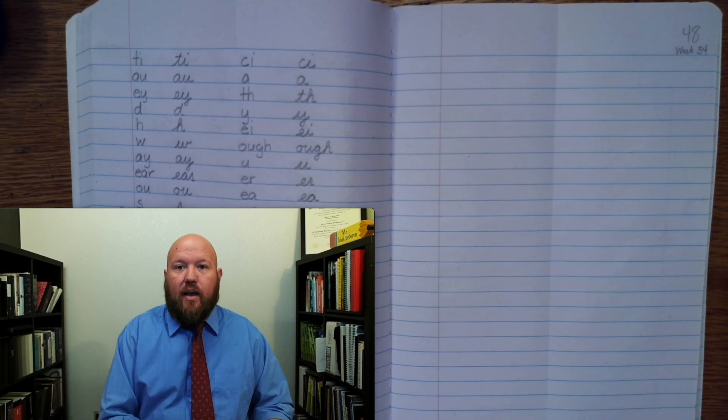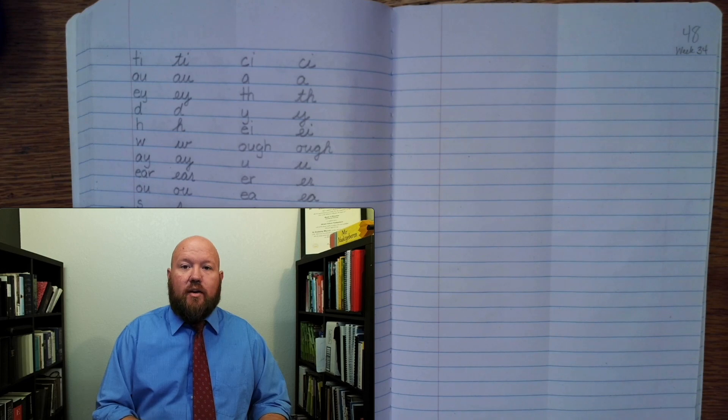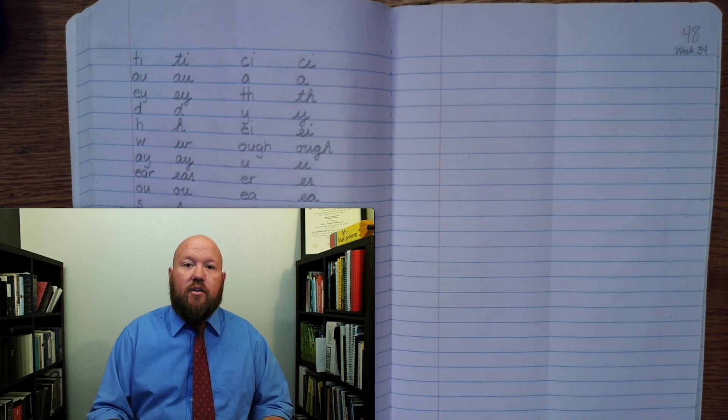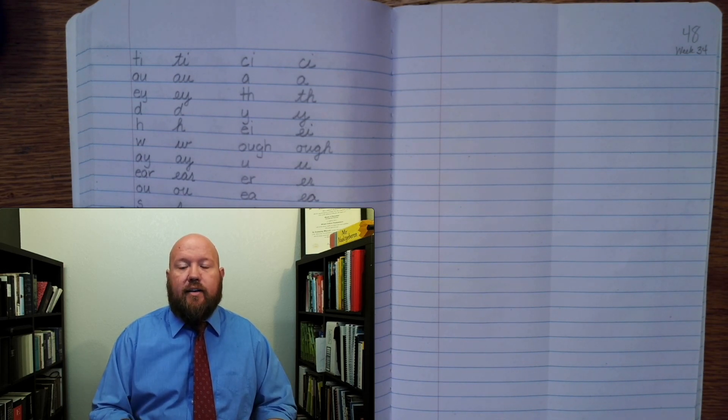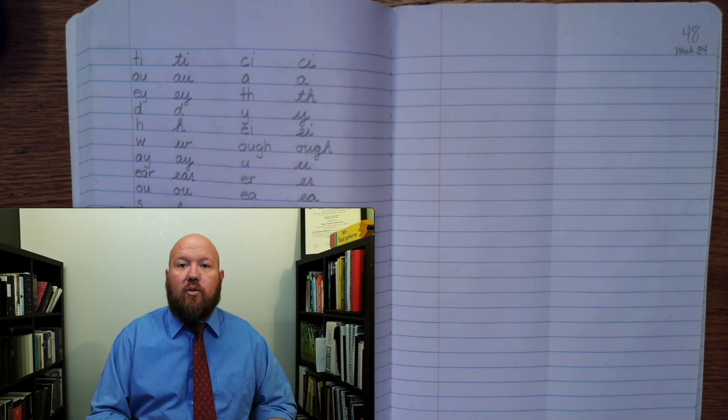Now written phonogram review. I will say the sound followed by the Q if there is one. You should say the sound followed by the Q if there is one as you write it. As you write it, don't look at mine. But when you are done, look up to see if you got it right. If you did, that's great. If you didn't, that's okay. Just put a line through it and put the correct one beside it. And that way you'll know which ones you need to spend extra time studying.